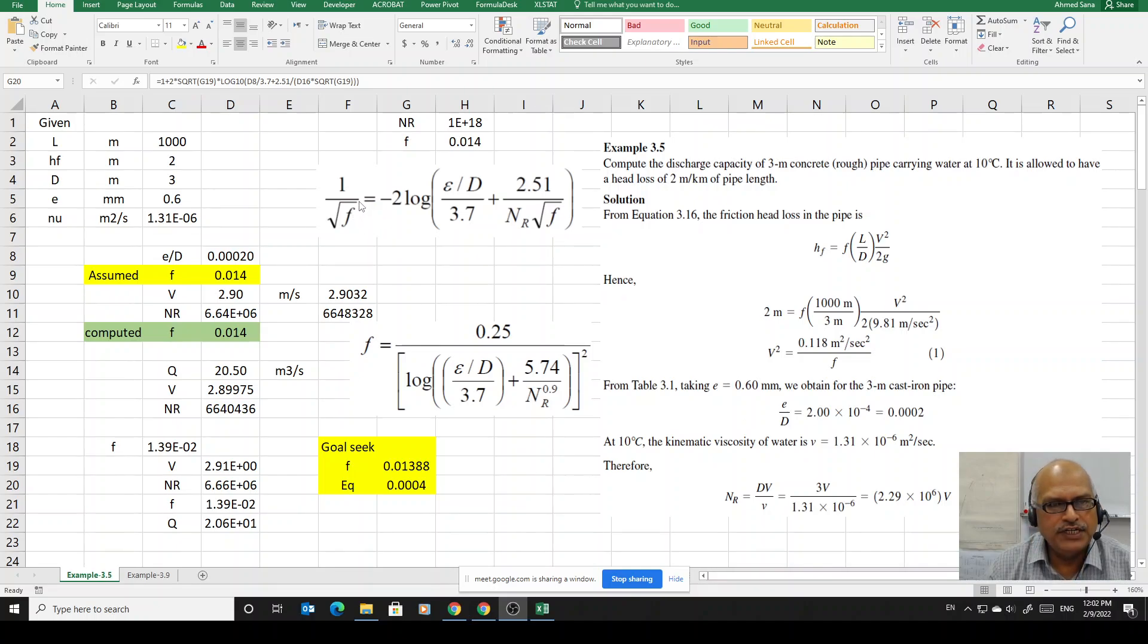We just multiplied square root of f on the right hand side and then shifted this right side to the left hand side. Because this is minus sign, it would become 1 plus 2 times square root of f times log of whatever is there equal to 0. That would become the left hand side of this equation.